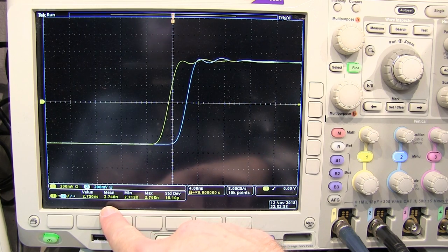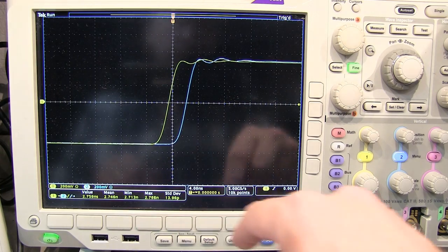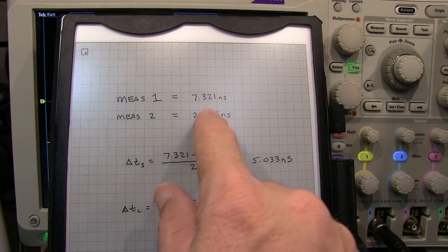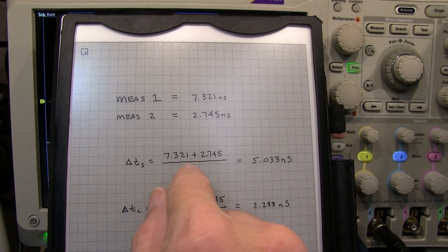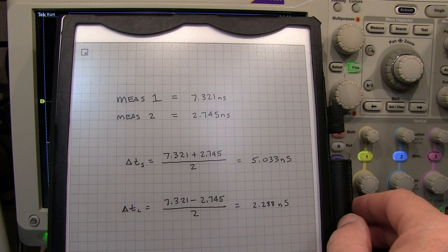So now our measurement number 2 is showing 2.745 nanoseconds. And so if we run those numbers from measurement 1 and measurement 2, the sum of those measurements divided by 2 gives me about the 5 nanosecond delay that I had dialed in to the signal generator originally.